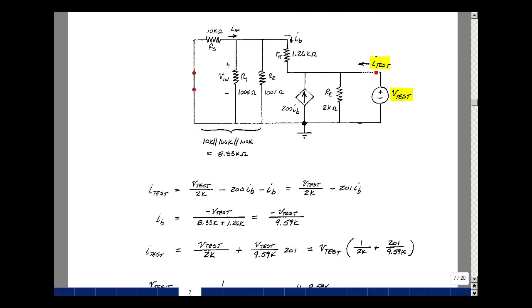The current I_test is going to equal this current, plus this current, plus this current. In other words, whatever enters a node is going to leave the node. It's got V_test across it, so the current would be V_test divided by 2k. The current in this direction is minus 200 I_B, and then the current in this direction is minus I_B.